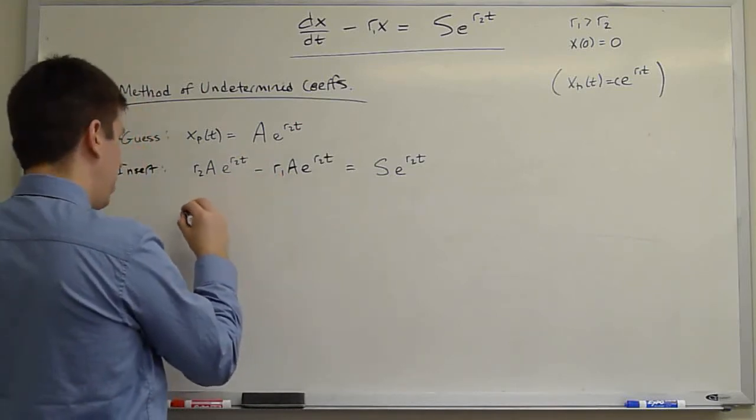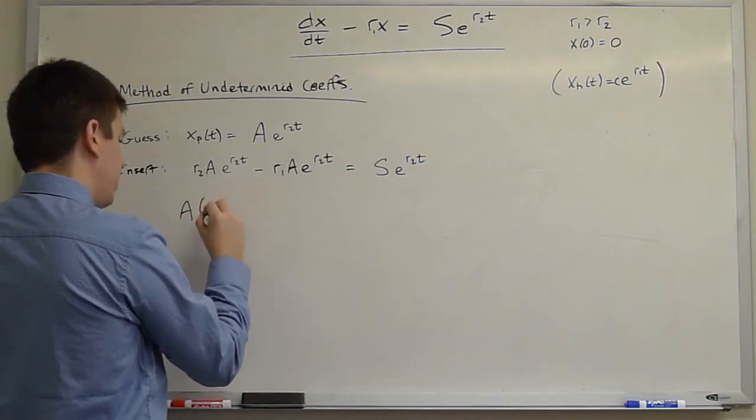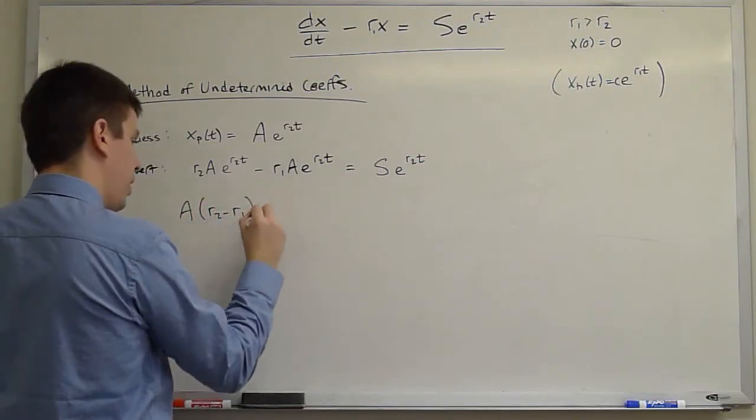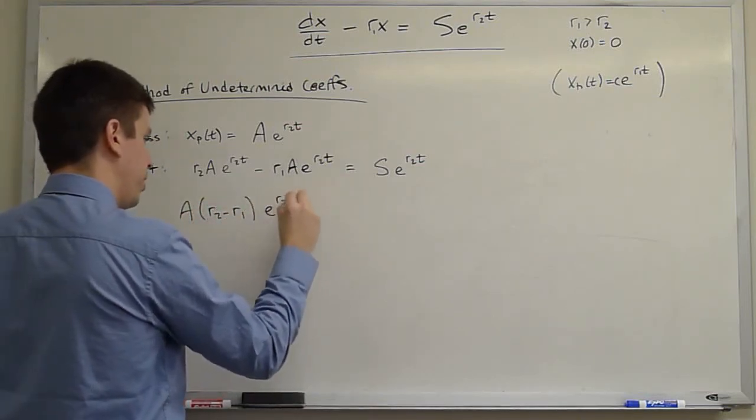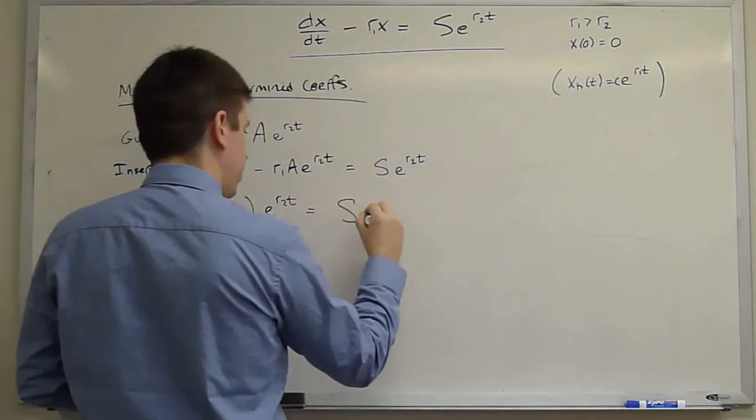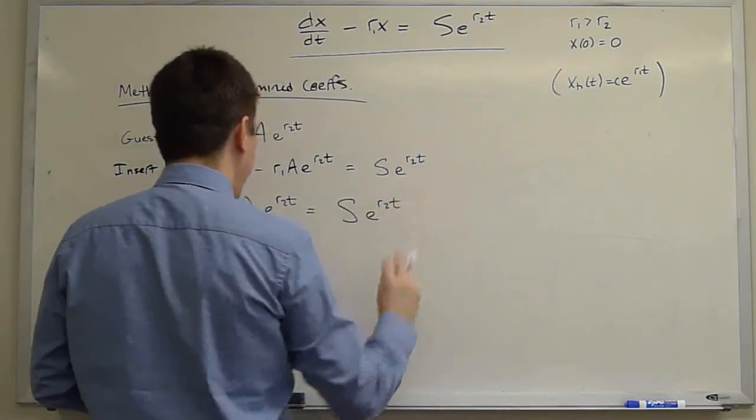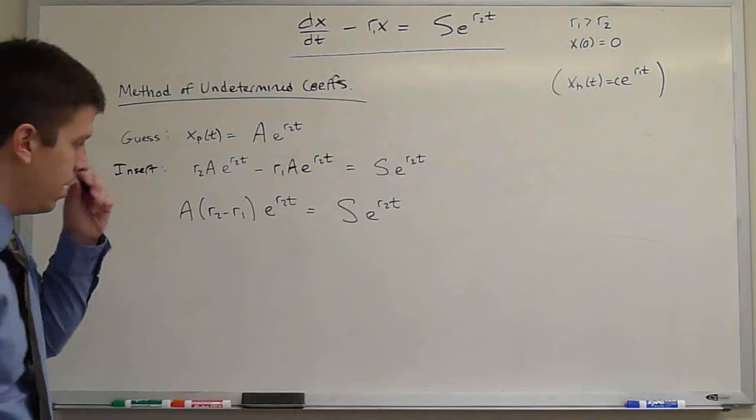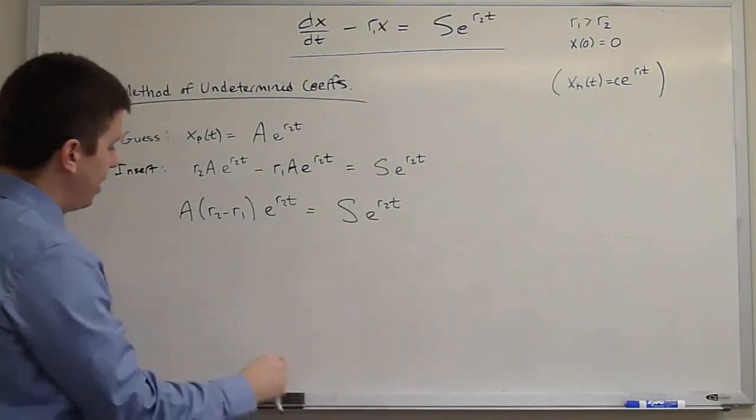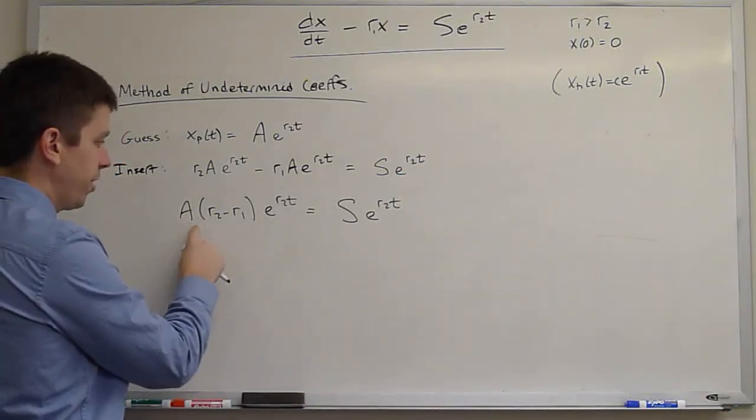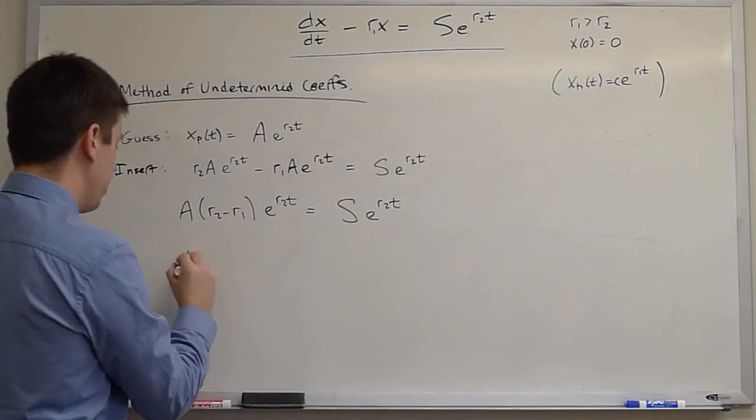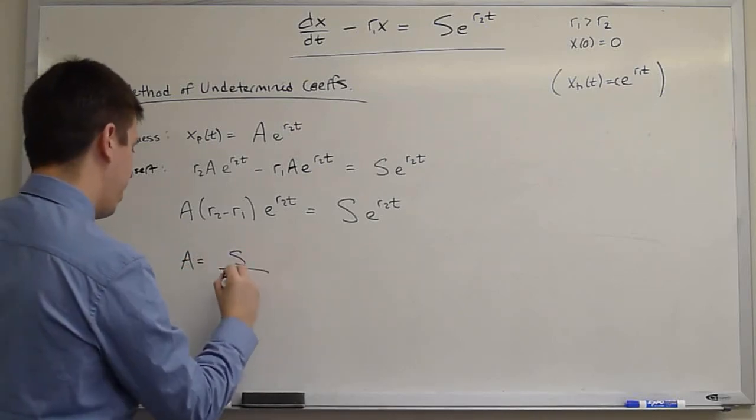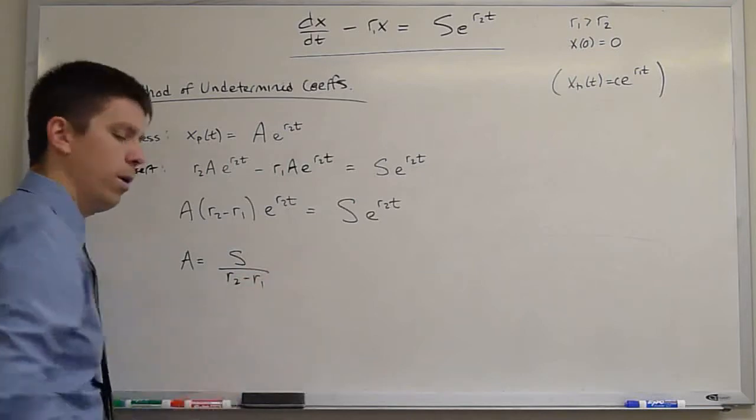What do we have on the right? We have A times R2 minus R1 e to the R2t equals S e to the R2t. And for this to be valid, A must be chosen very carefully. A must be equal to S divided by R2 minus R1.